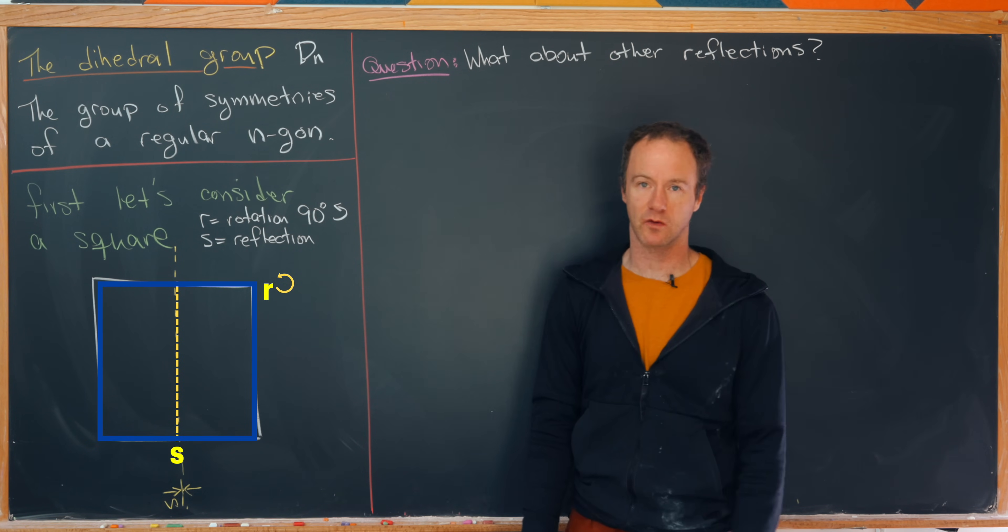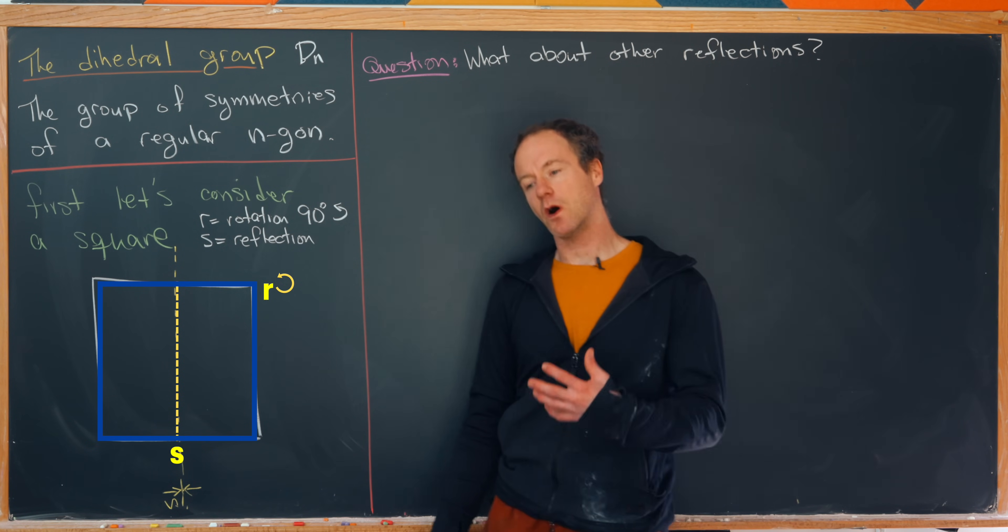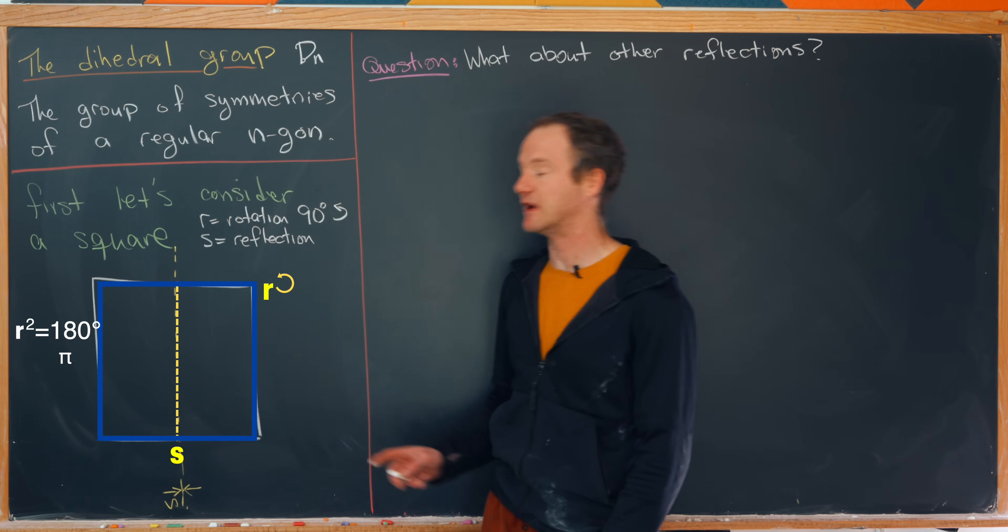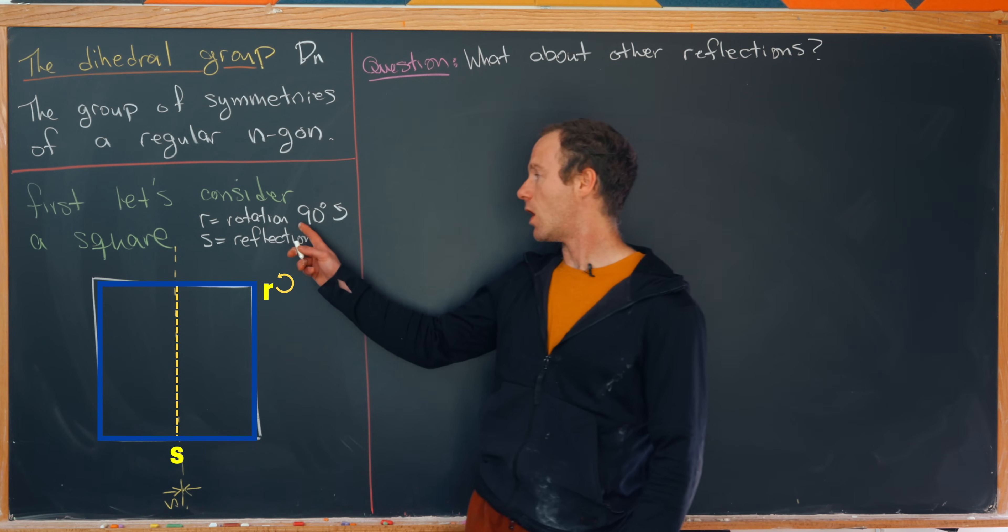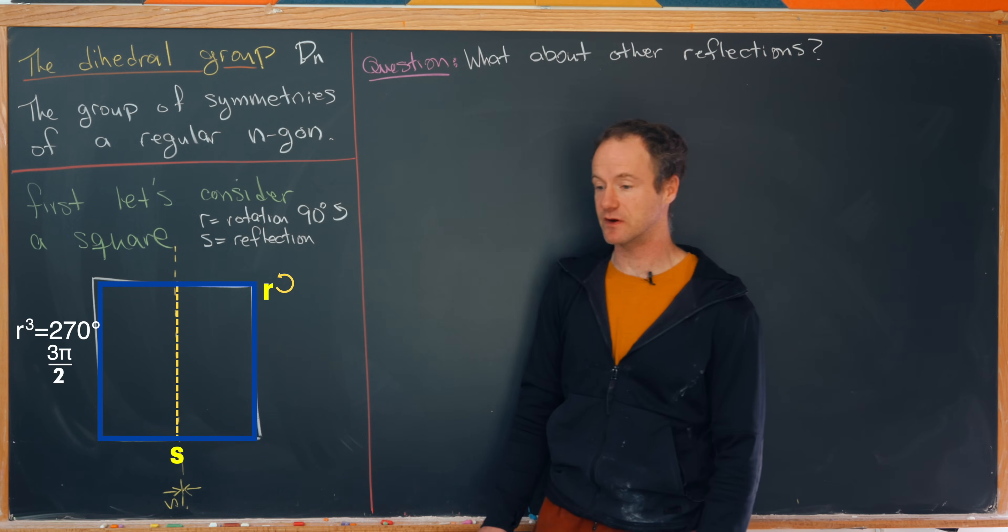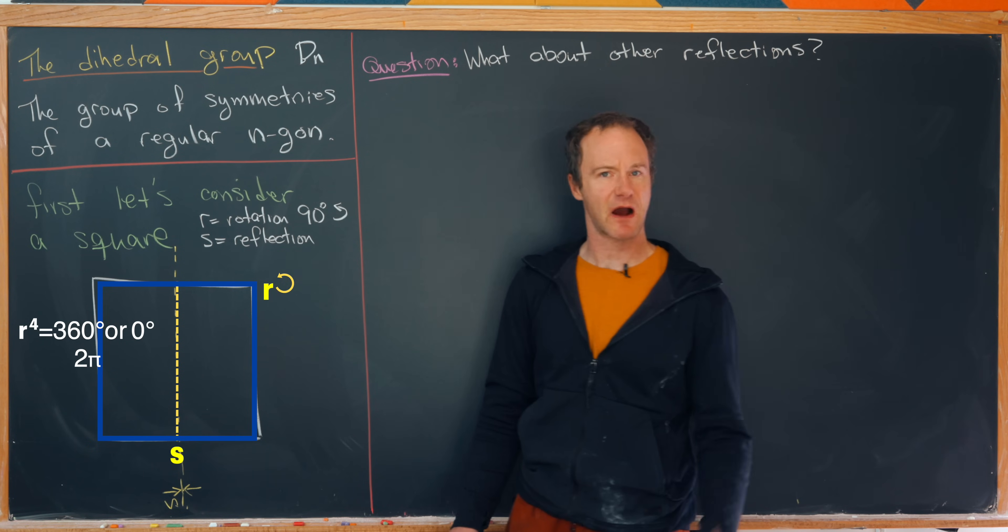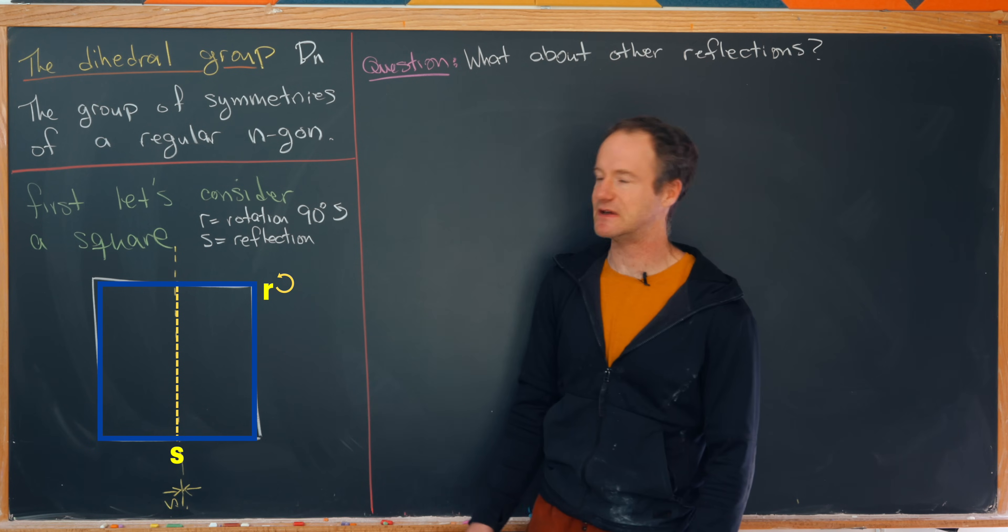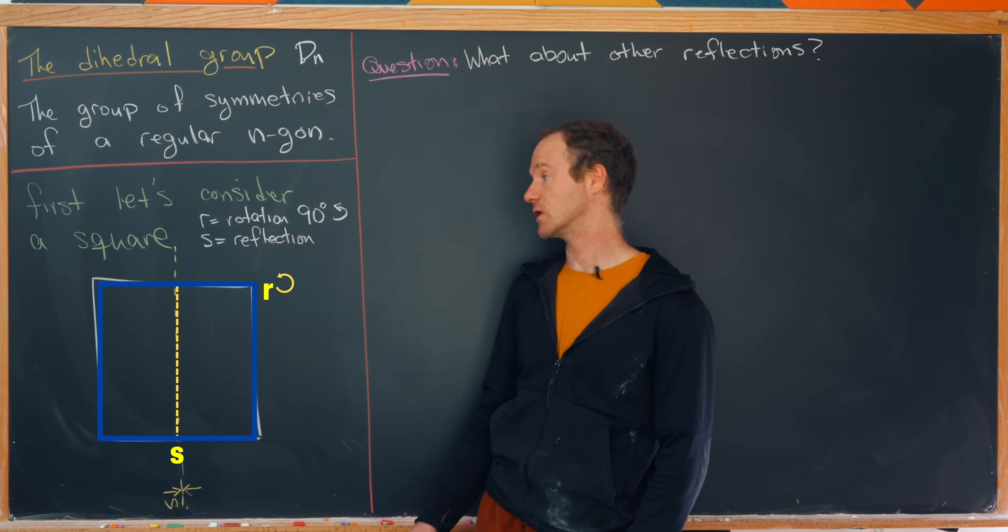Now I'd like to very quickly point out that we can get all of the rest of the rotations just by composing r with itself. So r squared, or r composed with r, will be a rotation by 180 degrees. r cubed will be a rotation by 270 degrees. And r to the fourth power, well that's the same thing as not doing anything. So that's like a rotation by 360 or 0 degrees.